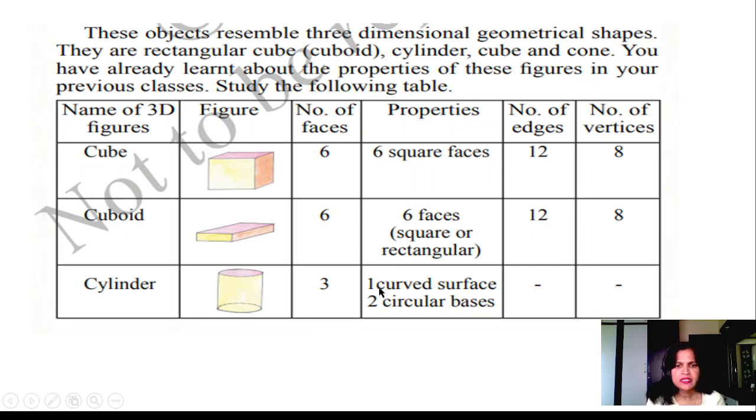Cylinder. Cylinder has 1 curved surface and 2 circular bases, 1 above and 1 below. 3 faces are there. No number of edges, no edges for the cylinder. Number of vertices: no vertices for this.